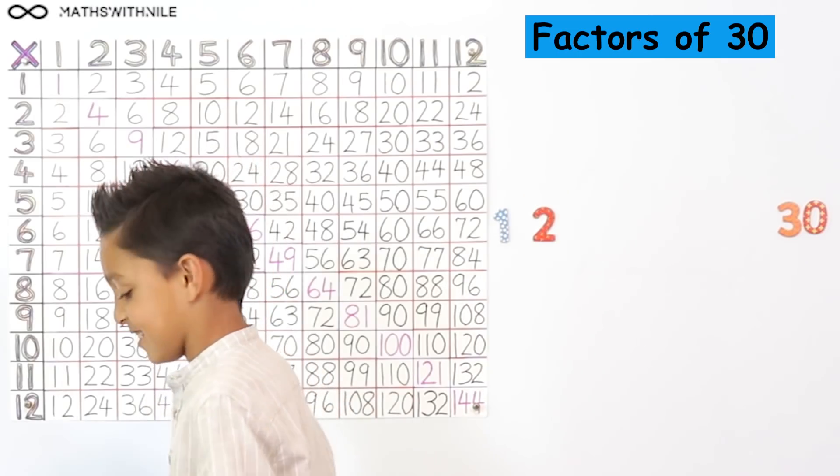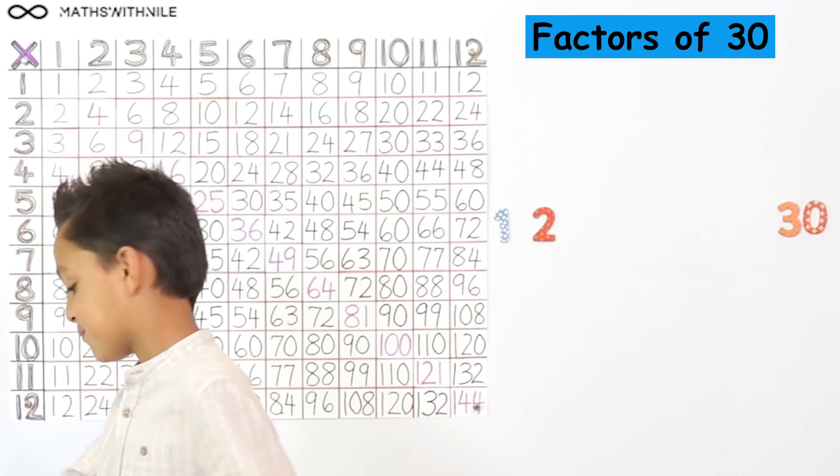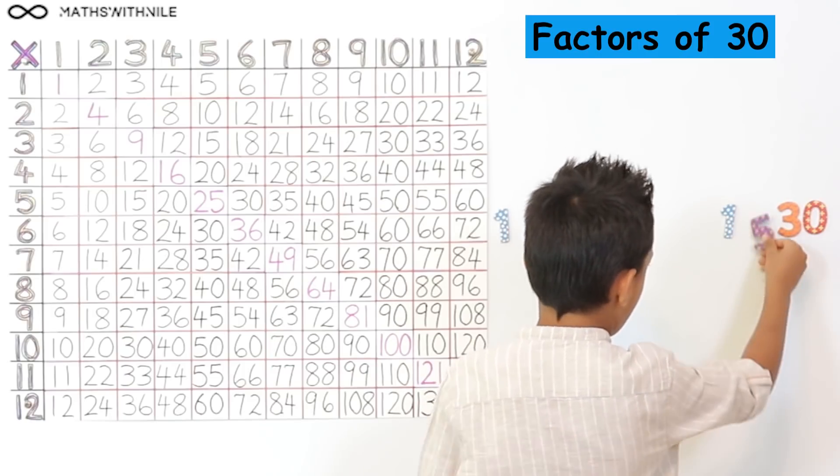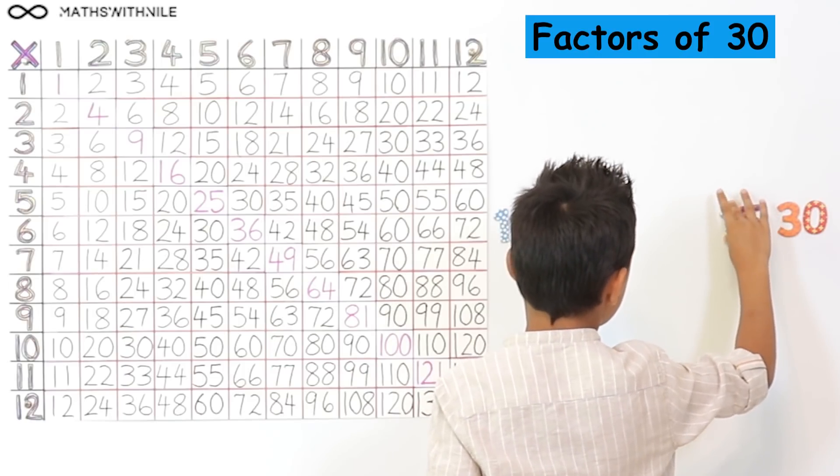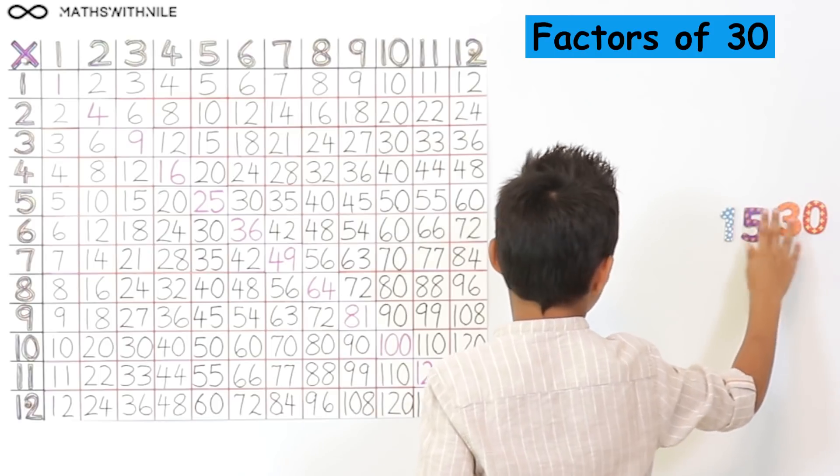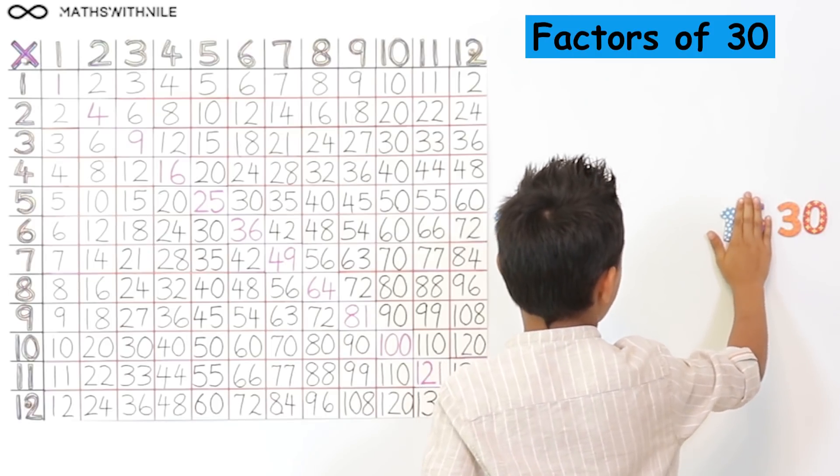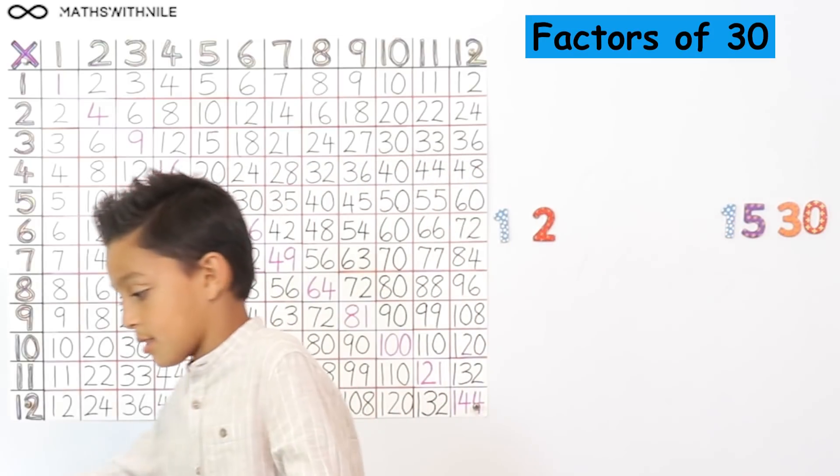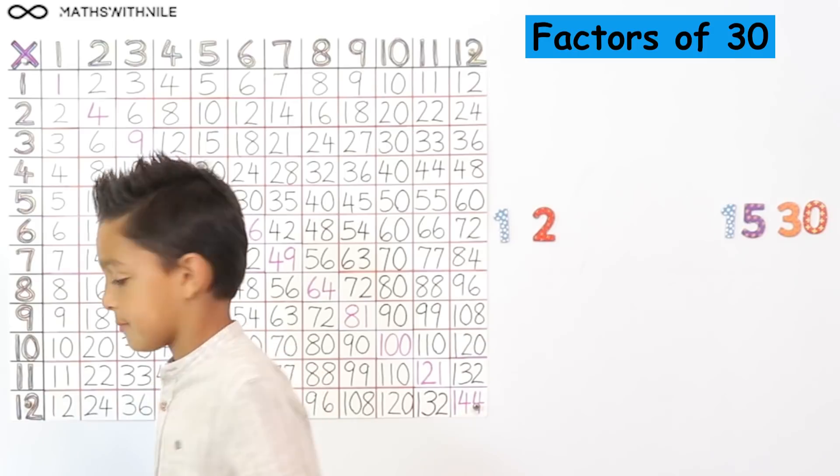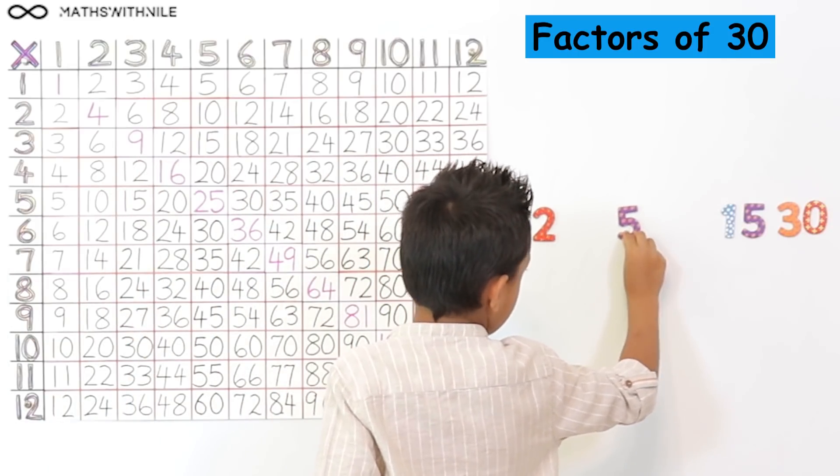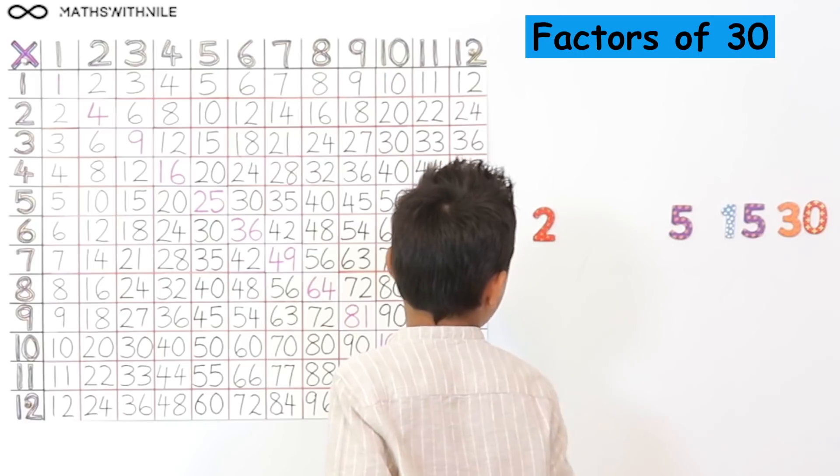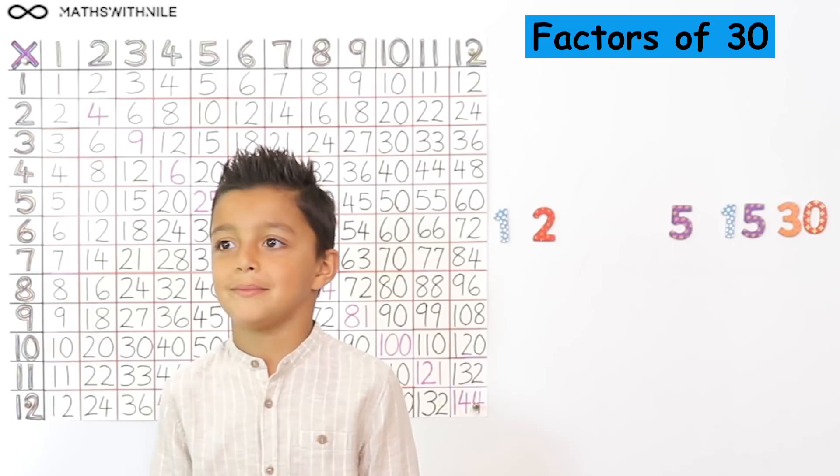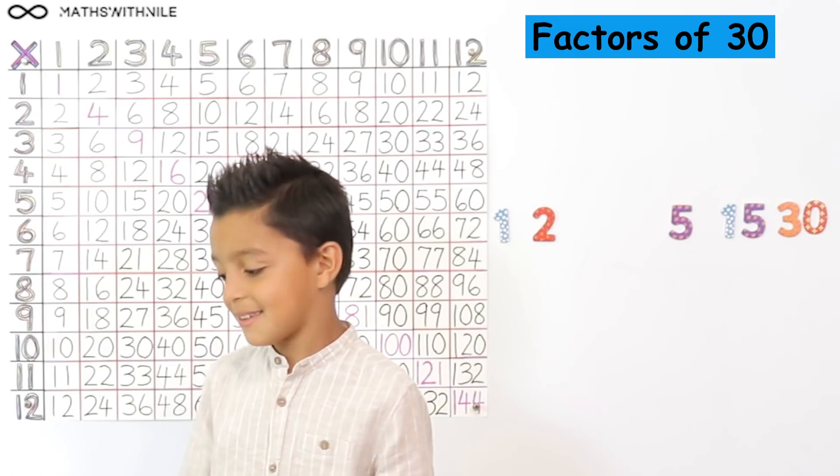Okay. 2 times what? 15. Okay. And 5. Why do you think 5? Because 5 can go into 15. Okay. So 5 is a factor of 15. So you're saying based on that it would be a factor of 30? Yeah. Okay, brilliant. And 5 times what will give you 30? 5 times 6. Okay. Remember you've got your times table grid behind you.